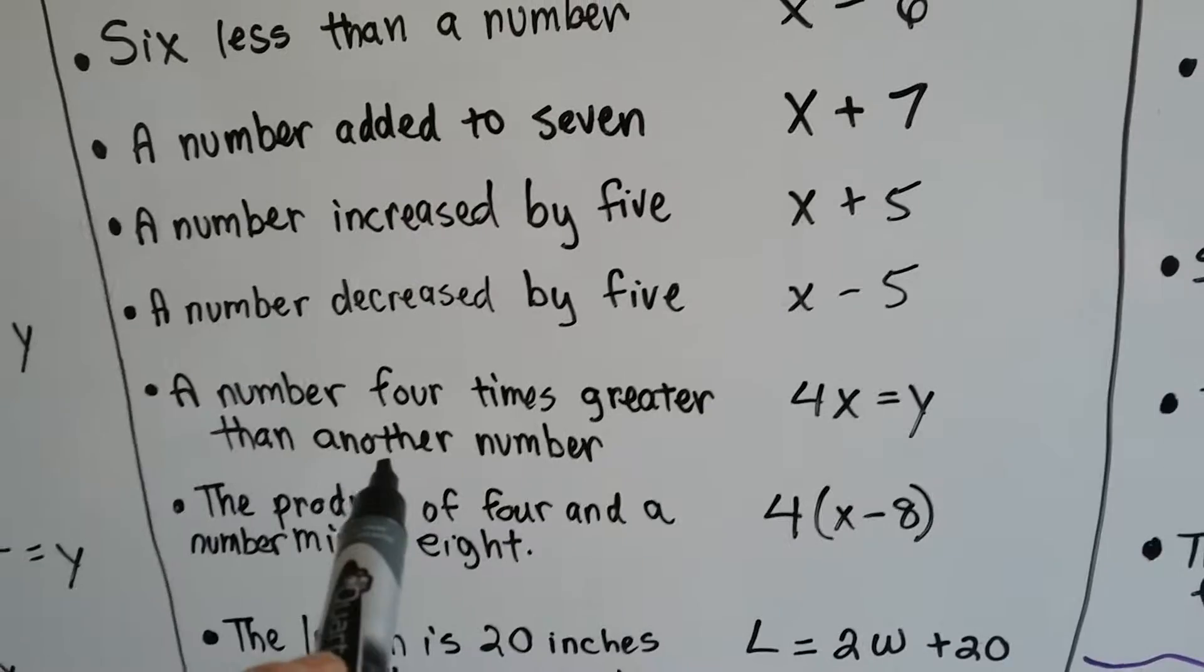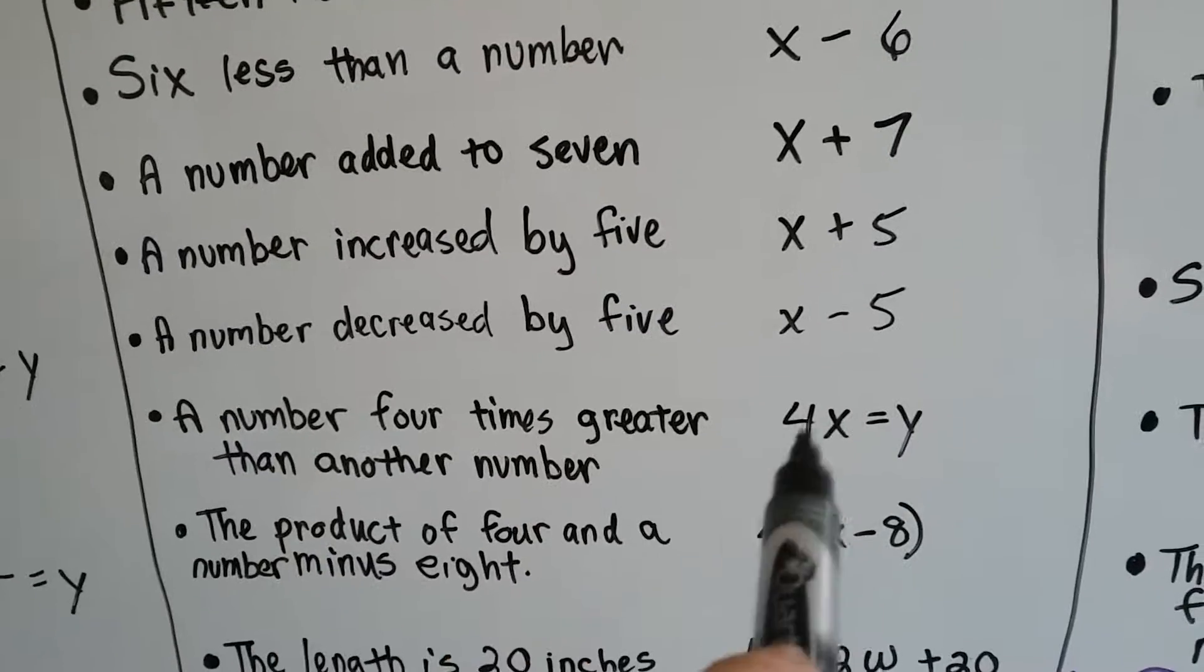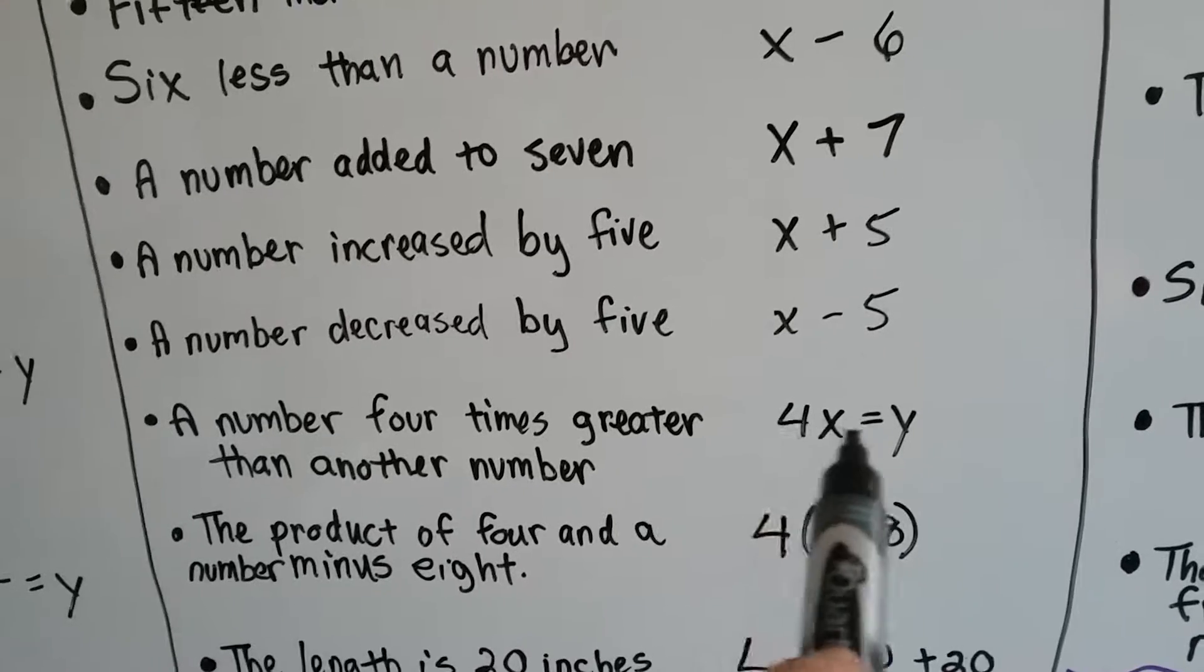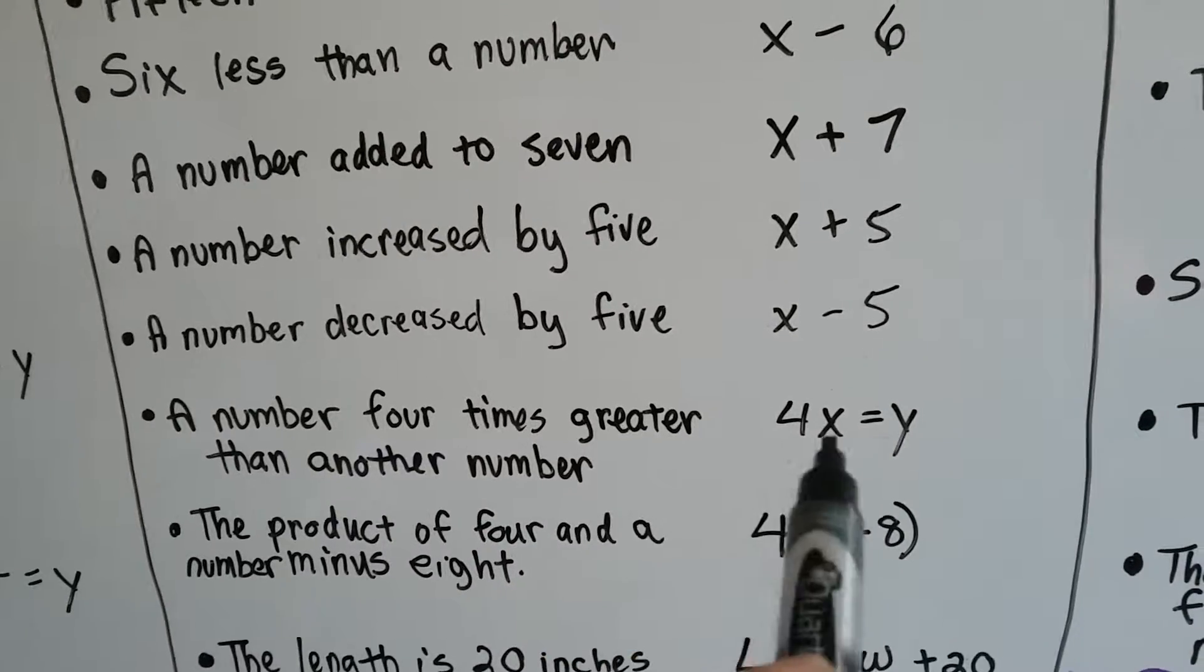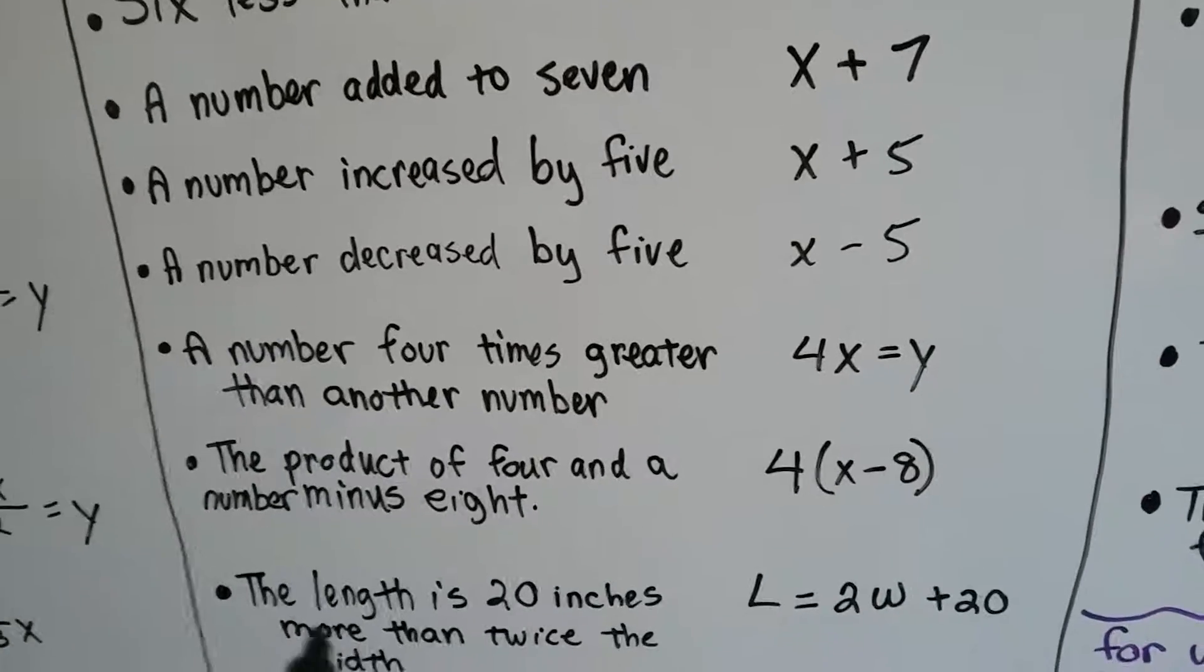A number 4 times greater than another number. If it's 4 times, that tells us it's multiplication. If it's greater than another number, we know there's another number here, so we have to use a y.